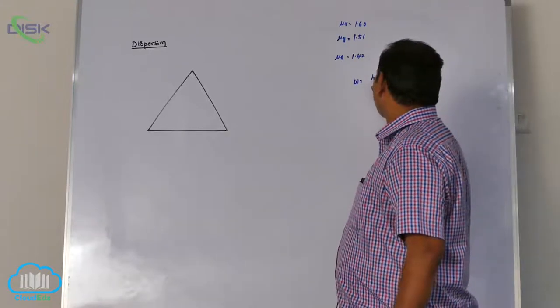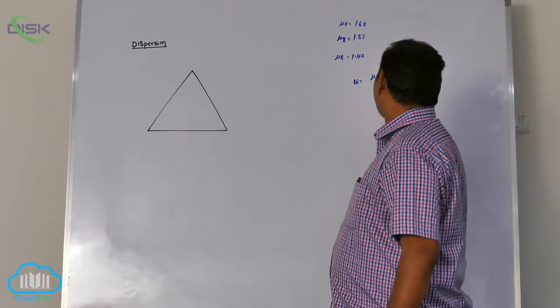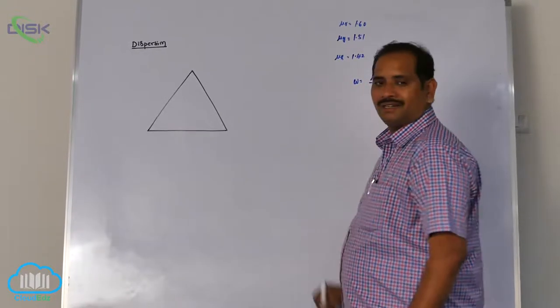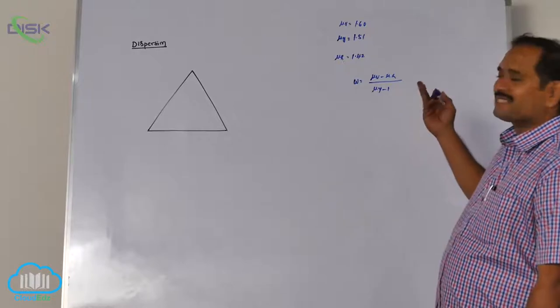Omega equals mu v minus mu r by mu yellow minus 1. There is no A term because A is cancelled.